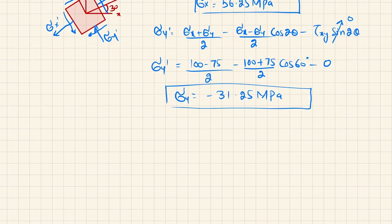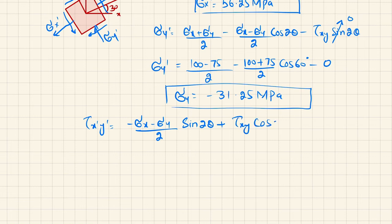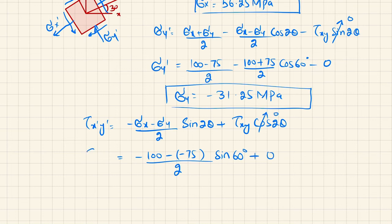Now we will find shear stress in the transformed section. Tau x dash y dash equals minus (sigma x minus sigma y)/2 times sin 2θ, plus tau xy times cos 2θ. Substituting: minus (100 − (−75))/2 × sin 60°, and the tau xy term is 0. So tau x dash y dash comes out to be minus 75.8 MPa.